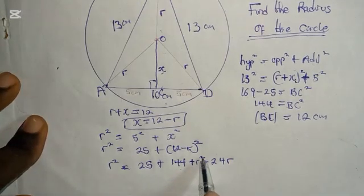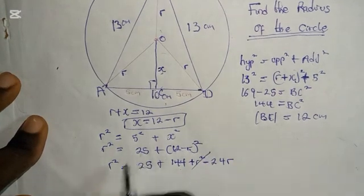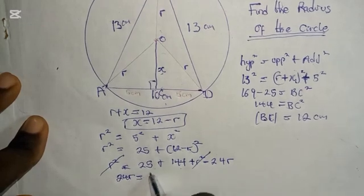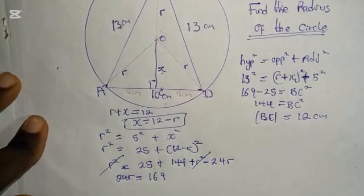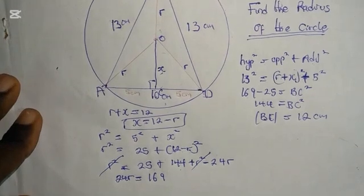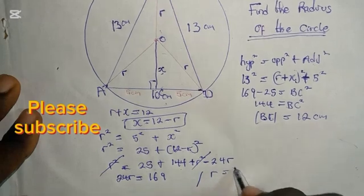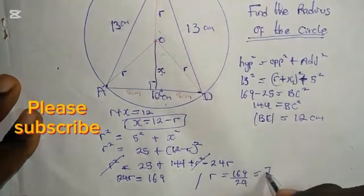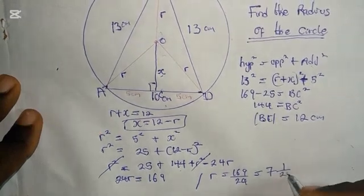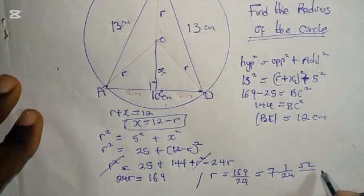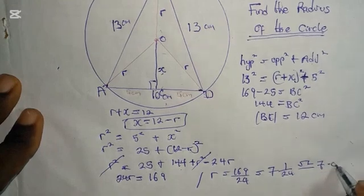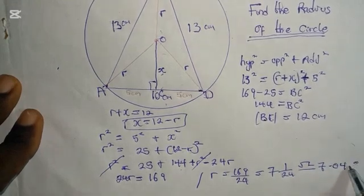Now, collect like terms. This is going to cancel out this. So we are going to have 24R = 169. So we are going to have R = 169 ÷ 24, which is equal to 169/24, and this is approximately 7.04 cm.